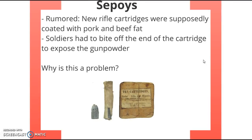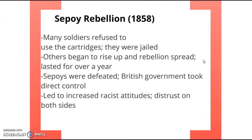Then there was this incident. There was a rumor — and as far as we know it wasn't even true — but it doesn't matter, the sepoys believed it. The rifle cartridges the British Empire was using were supposedly coated with beef and pork fat. Hindu people do not believe in eating beef or pork, and Muslim people do not believe in eating pork. In order to fire a rifle, you had to put the cartridge in your mouth to bite off the end, to pour the gunpowder in — this was going to deeply offend the sepoys. They actually refused to do it, and what we end up with is an event called the Sepoy Rebellion.